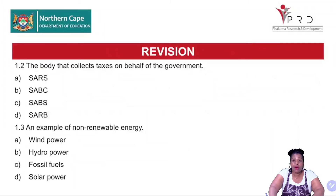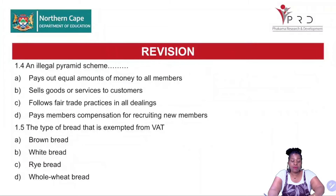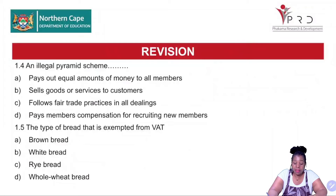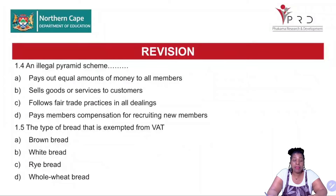Answer these two questions and then we can proceed to question 1.4. An illegal pyramid scheme: A, pays out equal amounts of money to all members; B, sells goods or services to customers; C, follows fair trade practices in all dealings; D, pays members compensation for recruiting new members. Question 1.5: the type of bread that is exempted from VAT is — A, brown bread; B, white bread; C, rye bread; and D, whole wheat bread. Answer 1.4 and 1.5, then proceed to the next question.